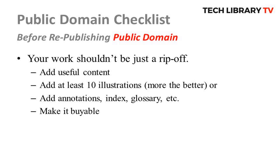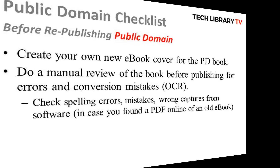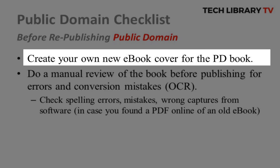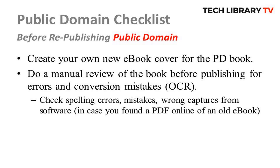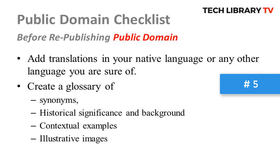Number four: the book you want to publish should not be a direct ripoff — you must add your own content in terms of illustrations, annotations, or translations. Since many public domain books are freely available online, it takes a lot of work to make it unique so people would buy it from you. Key changes you can make include creating a new book cover instead of using the old one. Also, don't simply copy-paste the text content; instead, carefully review each and every word to ensure there are no mistakes in your republished work. This is especially important when using OCR — optical character recognition software — to scan and read digital content, so manually review before publishing.